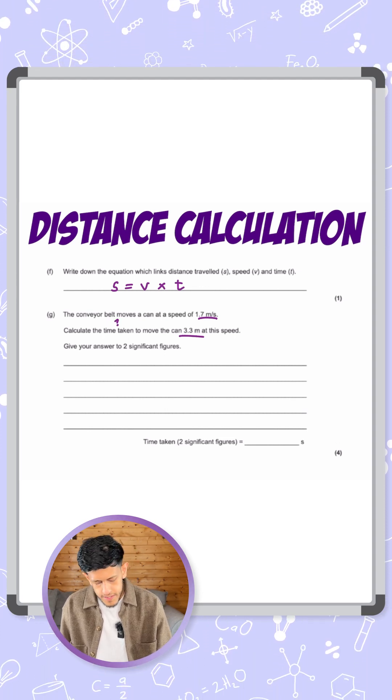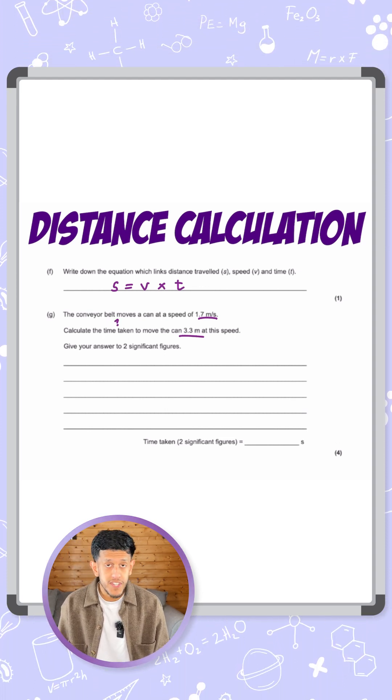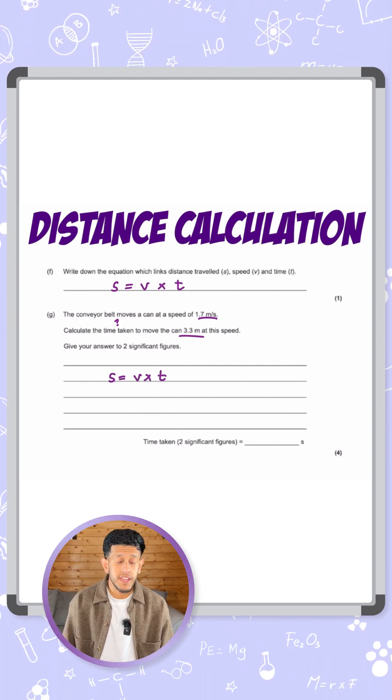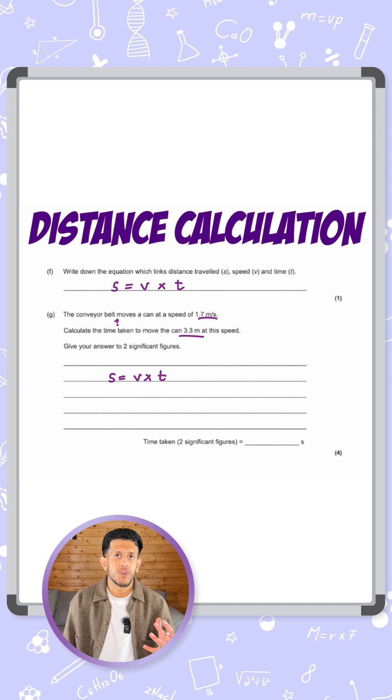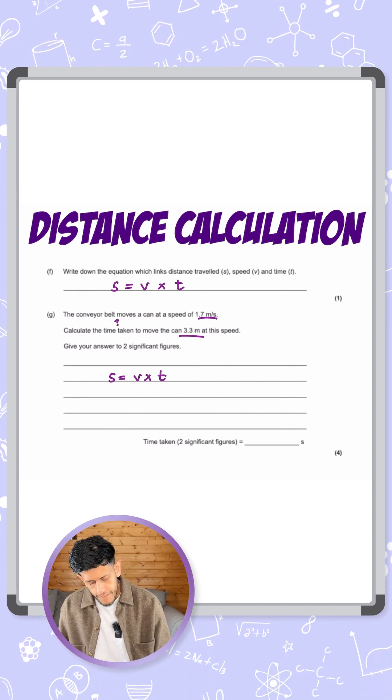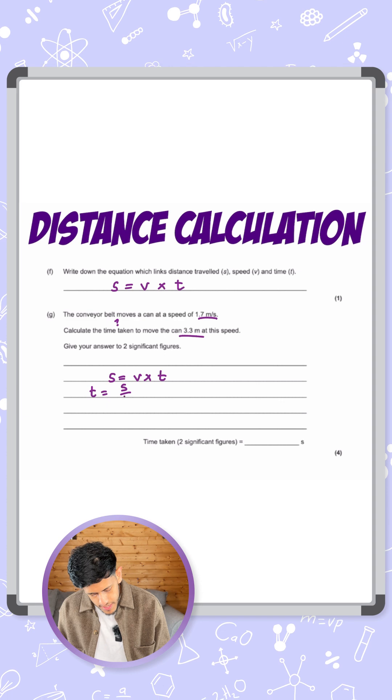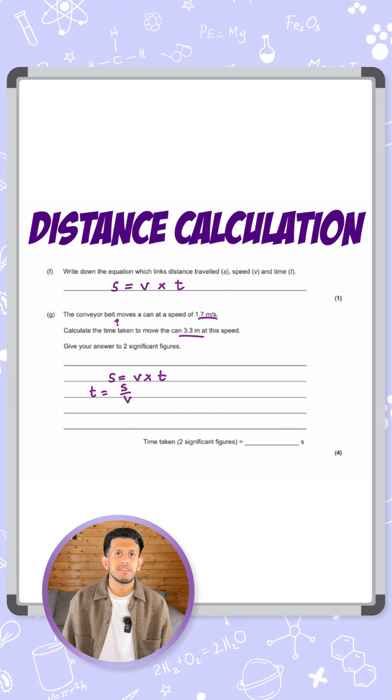We have the equation we've just written down at the top: s equals v times t. But they want us to calculate the time taken—they want us to find t—so we're going to have to rearrange the equation. So if s equals v times t, I rearrange that to give me t equals s over v, or time equals distance over speed.